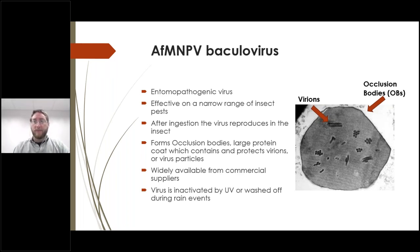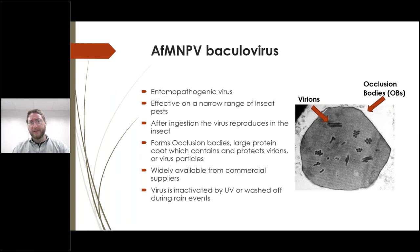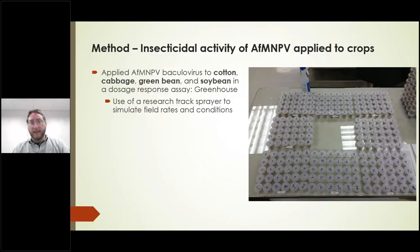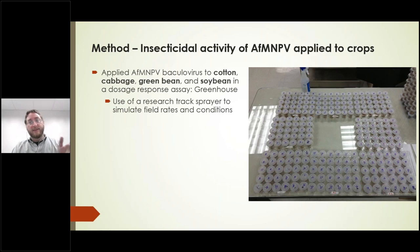These baculoviruses are widely commercially available, but they do have some weaknesses: they can be inactivated by UV radiation and washed off during rain events. We worked with a polymer chemist to develop spray treatments and adjuvants to increase the longevity of the virus on leaf surfaces. Originally we wanted to determine the LC50 rate of the virus applied to four different crops — cotton, cabbage, green bean, and soybean — using a commercial research track sprayer to simulate field rates and conditions.